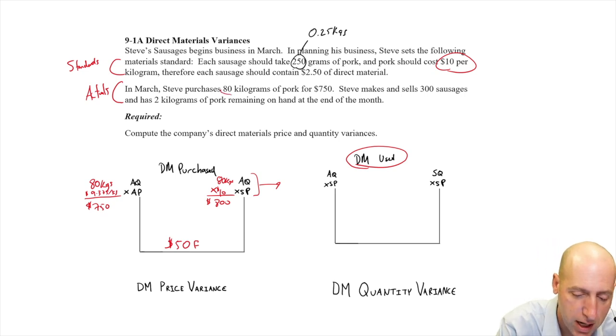Well, I purchased 80 kilograms. At the end of the month, I had two kilograms remaining. I must have used up 78 kilograms. Now our standard price, still 10. 78 times 10 is 780.